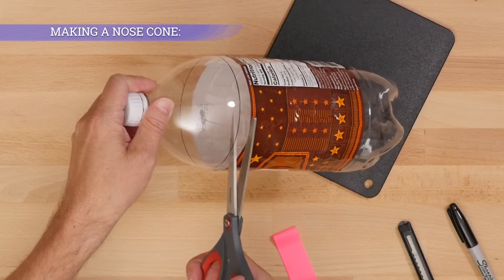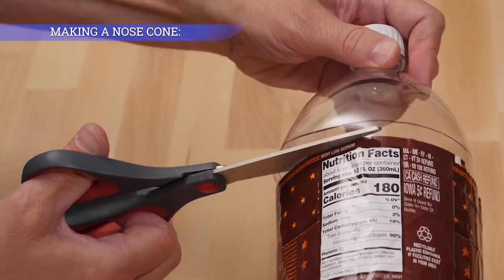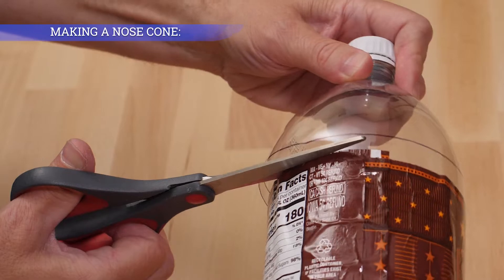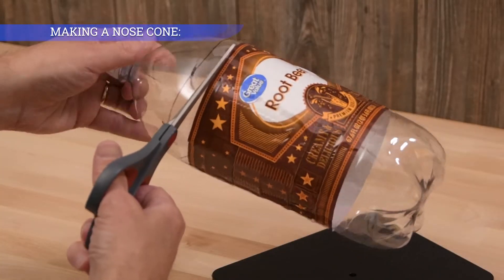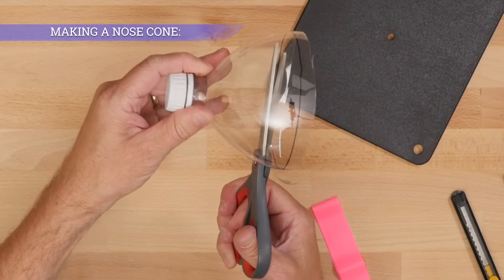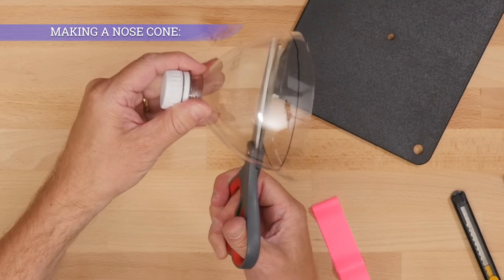Rough cut the lower portion of the bottle away. Cut precisely along the drawn line.